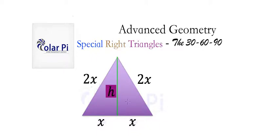If we focus on the 30-60-90 degree triangle on the right half, then by the Pythagorean theorem we can write that x squared plus h squared equals the hypotenuse squared. The hypotenuse is 2x, so x² + h² = (2x)².